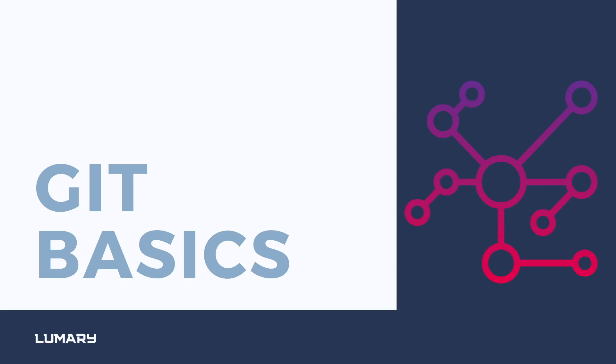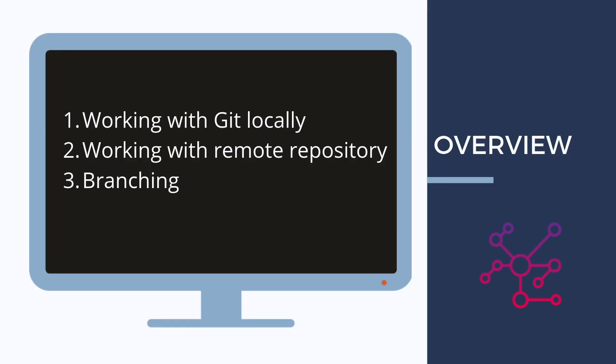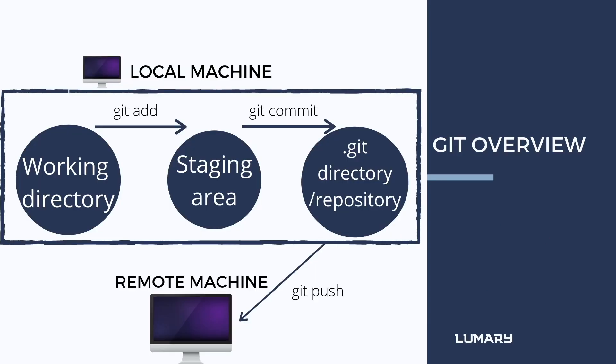Hi everyone, today I'm going to show you the Git basics. Git is an open source version control system which you can download on the Git website — I'll put the link in the description box. The tutorial is separated in three parts: the first part is about how you can work with Git locally, the second part will show how you can work with a remote repository, and in the last part we are going to talk about branching. Before we jump to the terminal, let's have a quick look at how Git works.